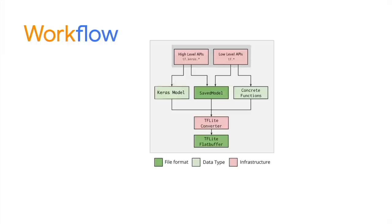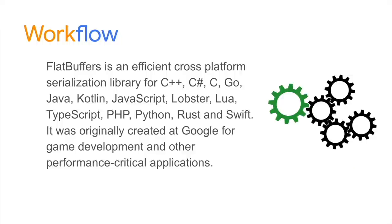This block diagram illustrates the workflow. You start with high-level Keras APIs to create a model. Once the model is ready, you use a TF Lite converter, which takes your saved TensorFlow format file and converts it into a flat buffer file. TensorFlow Lite represents your model in a flat buffer format — an efficient cross-platform serialization library supporting C++, C#, Go, Java, Kotlin, JavaScript, Python, and more. It was originally created at Google for game development and performance-critical applications.